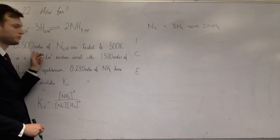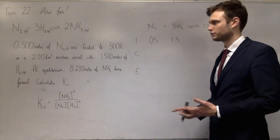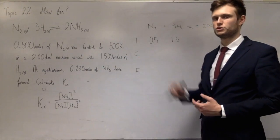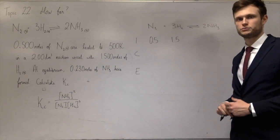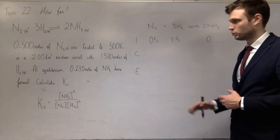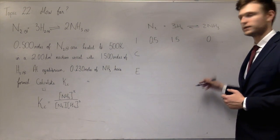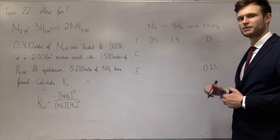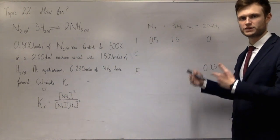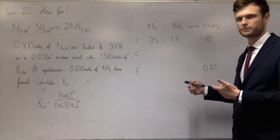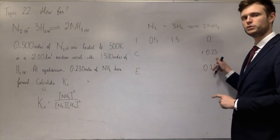We start with half a mole of nitrogen and one and a half moles of hydrogen, and we assume no ammonia initially. At equilibrium we've made 0.23 moles of ammonia, meaning we must have gained 0.23 moles during the process. So in the change row, I write plus 0.23 moles for ammonia.